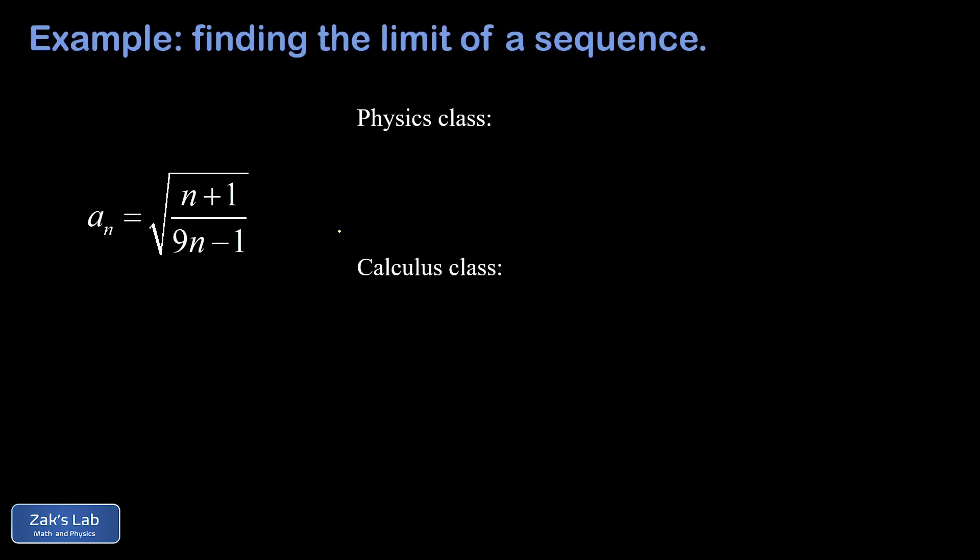In this video we're computing the limit of a sequence whose terms are given by the square root of n plus 1 over 9n minus 1. So basically what we're doing here is trying to take the limit as n goes to infinity of this expression.